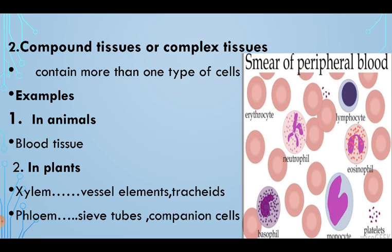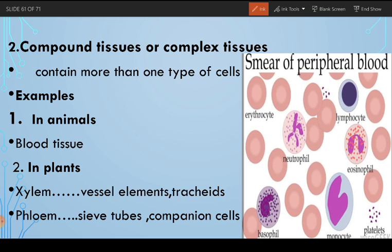The next category is compound tissues. Compound tissues are tissues which contain more than one type of cell. This is a combination of cells, but different from simple tissues because the cells are of more than one type — slightly different from each other. Because of the difference in structure, they perform different functions, but collectively they perform the function of that tissue.